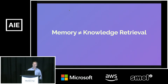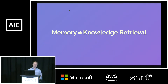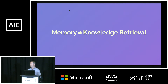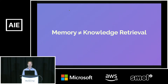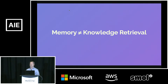Just summing it all up: agent memory is not about knowledge retrieval. Temporal and relational reasoning is critical to coherent memory. We need to track state changes over time and understand how preferences or user traits might change — and that's something that contemporary RAG solutions lack.